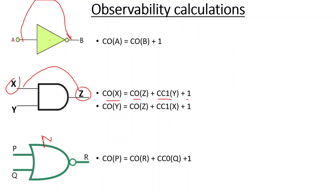For a NOR gate where R = (P+Q)bar, to observe P we must control Q to zero, because if Q=0 then R = P-bar. So CO(P) = CO(R) + CC0(Q) + 1. The observability of one input depends on the controllability of the other input plus the observability of the output. This is the key rule: observability of any input depends on controllability of the other input plus observability of the output.